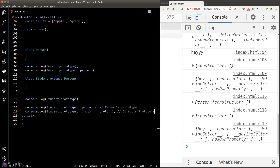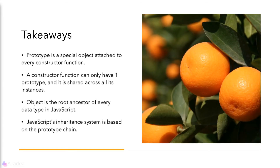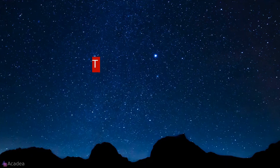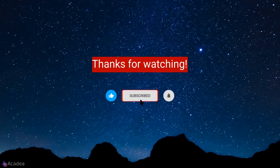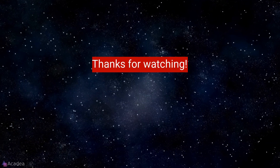The concept of prototype is an advanced topic in JavaScript. Key takeaways: prototype is a special object attached to every constructor function; a constructor function can only have one prototype, shared across all its instances, so all instances have access to properties and functions inside the prototype object. The object constructor is the root ancestor of every data type in JavaScript, and JavaScript's inheritance system is based on the prototype chain. If you enjoyed this content, don't forget to hit like, subscribe, and the bell icon for more content — thanks for the support!